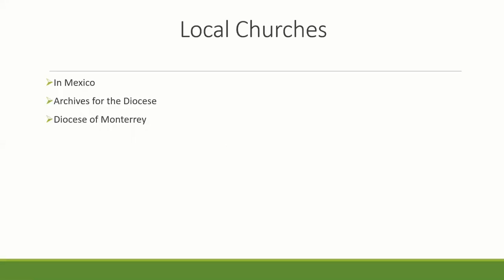Where do you find them offline? Unfortunately, the only places you're going to be able to find them offline are in Mexico, in the archives for the diocese. For example, the diocese where my ancestor is from is the Diocese of Monterrey, so you need to visit those archives in Monterrey, Nuevo León. But luckily, FamilySearch has microfilmed almost everything for those locations and for a lot of parts of Mexico.